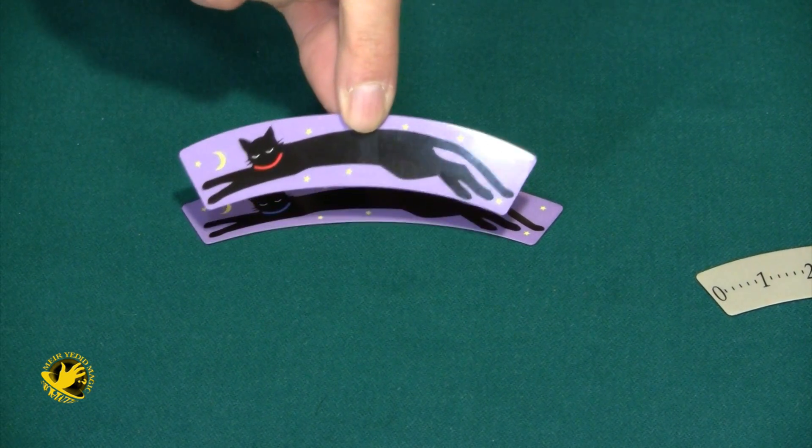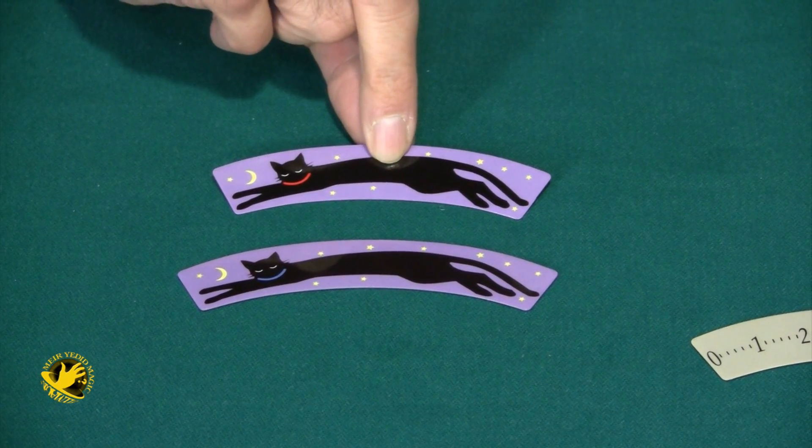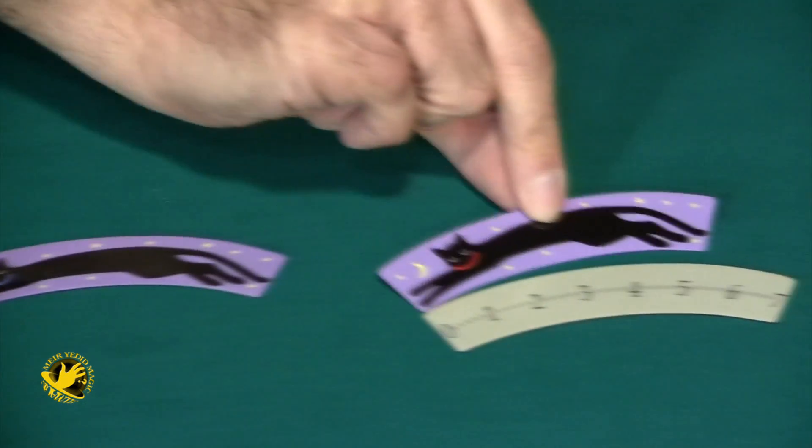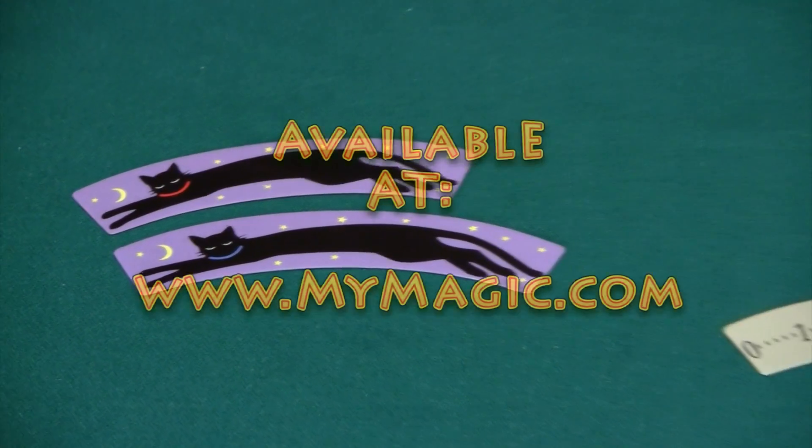But remember, this is only an optical illusion. Even though the girl cat looks like it's a lot smaller than it was a second ago, a lot less than the seven, this is only an illusion.